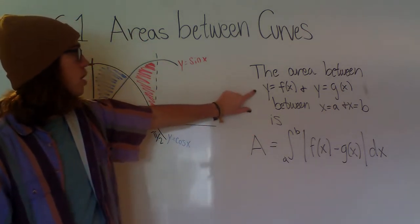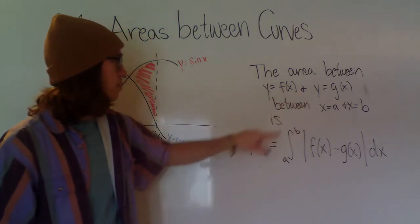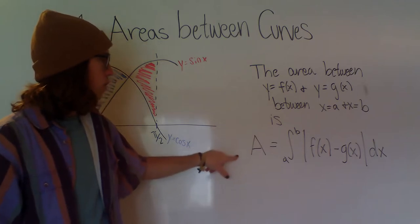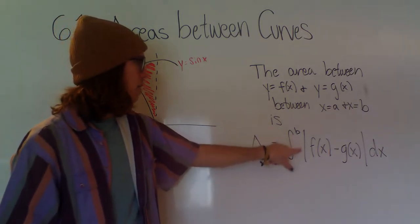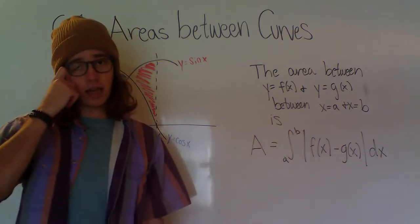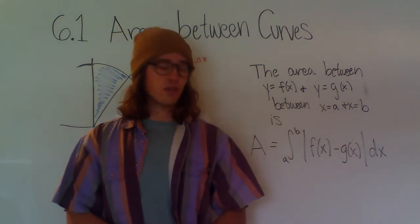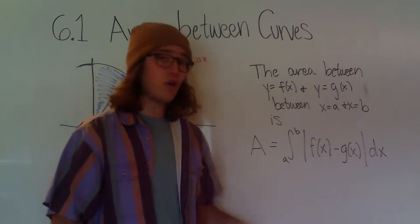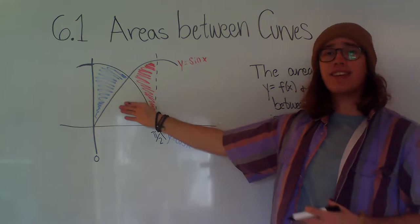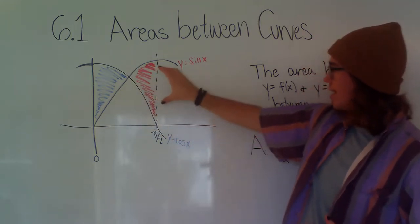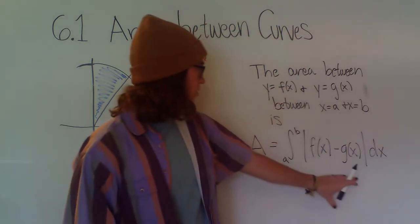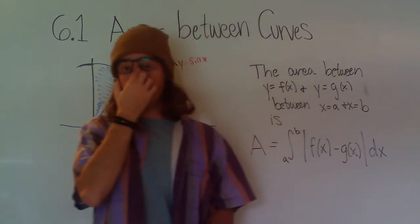So we get another definition that is a more general version of our previous definition. It states the area between y equals f of x and y equals g of x between x equals a and x equals b is equal to the integral from a to b of the absolute value of f of x minus g of x dx. And so this will make it so that no matter where we are on our curve, we will always get a positive answer. We'll never get a negative area because we have this absolute value to fix it.